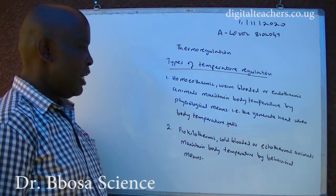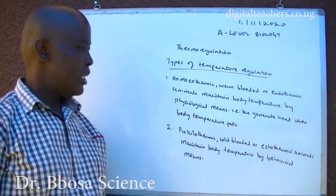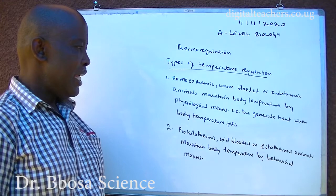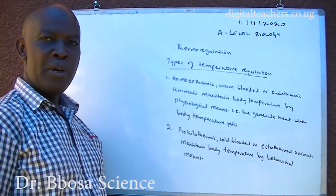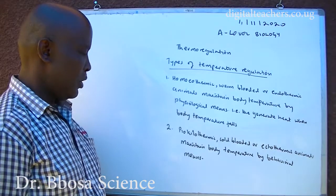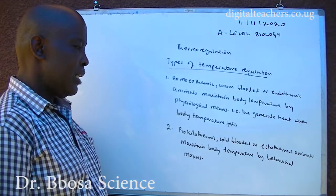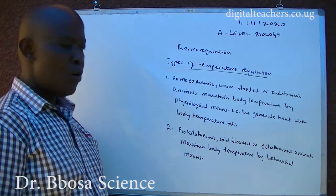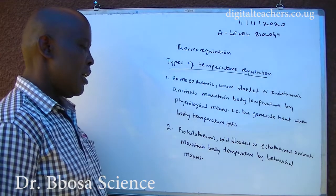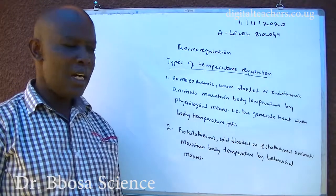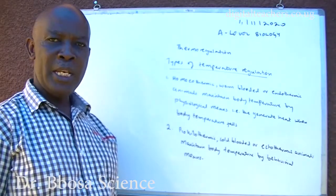Endothermic animals maintain body temperature by behavioural means and by physiological means — they generate heat when body temperature falls. Poikilothermic, or cold-blooded, or ectothermic animals maintain body temperature by behavioural means only.